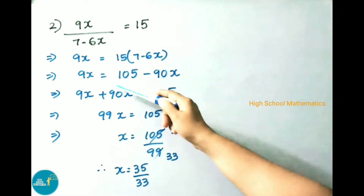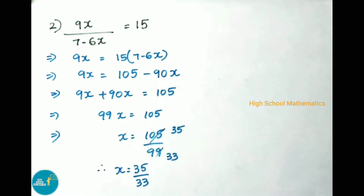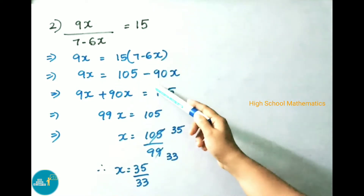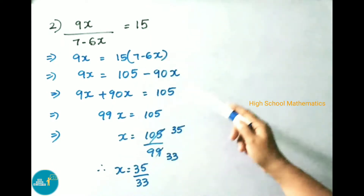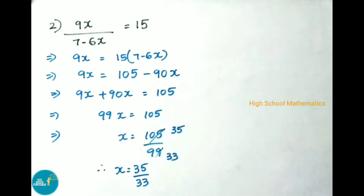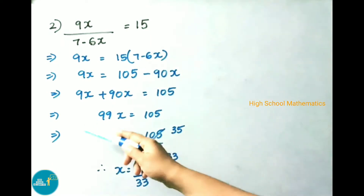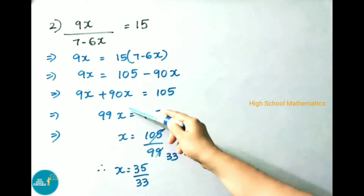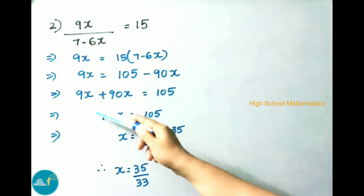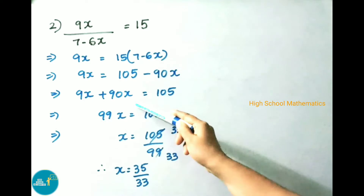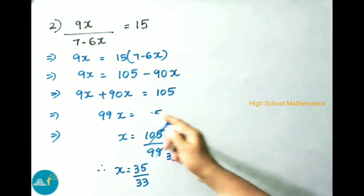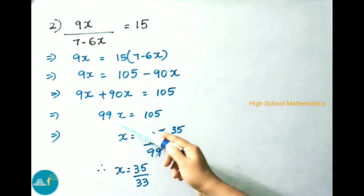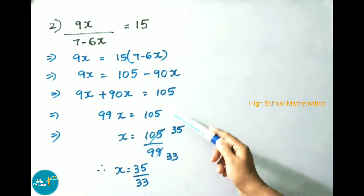Next step: 9x = 15 × (7 - 6x), which gives 9x = 105 - 15 × 6x = 105 - 90x. That implies 9x, and on transposing minus 90x becomes plus 90x. So 9x + 90x = 105. On adding both we get 99x = 105.